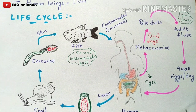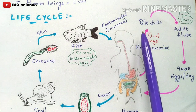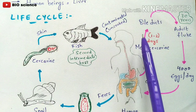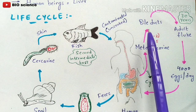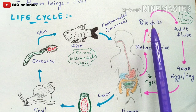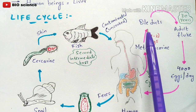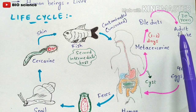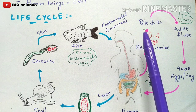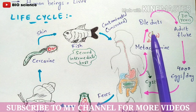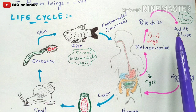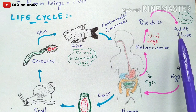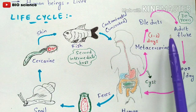The liver produces bile juice through the bile ducts. The metacercariae that reach the bile ducts begin consuming the bile juices continuously. Due to this consumption, they develop into adult flukes. One of the most important things to remember is that the survival capacity of the adult fluke is 30 years — that is its lifespan in the human host.